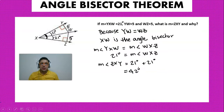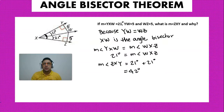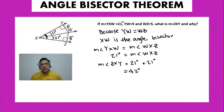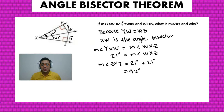In this problem we used the converse of the theorem: because WY and WZ are the same, XW is the bisector. Because XW is the bisector, both angles are equal, so the total angle is 21 plus 21. Feel free to rewatch the video, copy the formulas, and solve your problems. That's it for today!